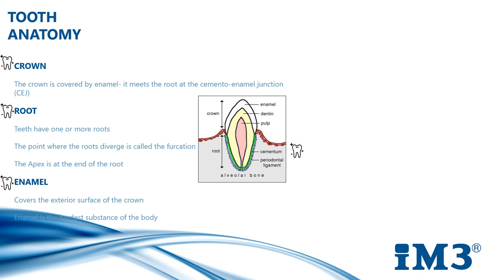The enamel covers the exterior surface of the crown. It's the hardest substance of the body. Cells called ameloblasts form the enamel, and it is capable of only very limited repair as it has no nerve or blood supply.